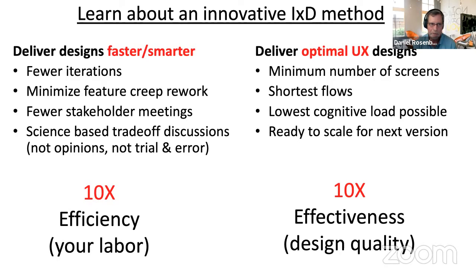The value proposition is faster and better. By faster, I mean fewer iterations, minimizing the cognitive load increases due to feature creep, fewer stakeholder meetings, and more accurate trade-off decisions. By optimal UX — 10x better — I mean the minimum number of screens, shortest flows, lowest cognitive load possible, and easily ready to scale to the next version.